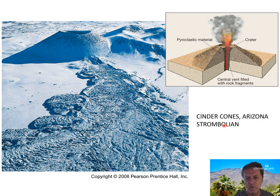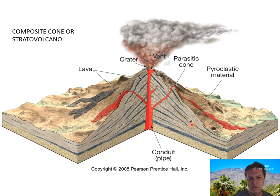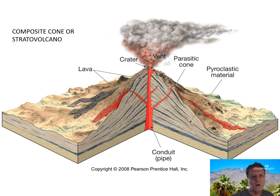Strombolian refers to a type of eruption named after the island of Stromboli near Italy in the Mediterranean Sea. Here's a depiction of a composite cone or stratovolcano. As you can see in this exposed cross section, you have layers of light brown pyroclastic material and darker layers of lava — the dark gray layers are lava and the light grayish-brown are pyroclastic layers. Here's the central pipe or conduit of the volcano, also called the throat, and the summit crater where lava and gas vent out of the volcanic structure, with lava flows on the sides of the mountain.